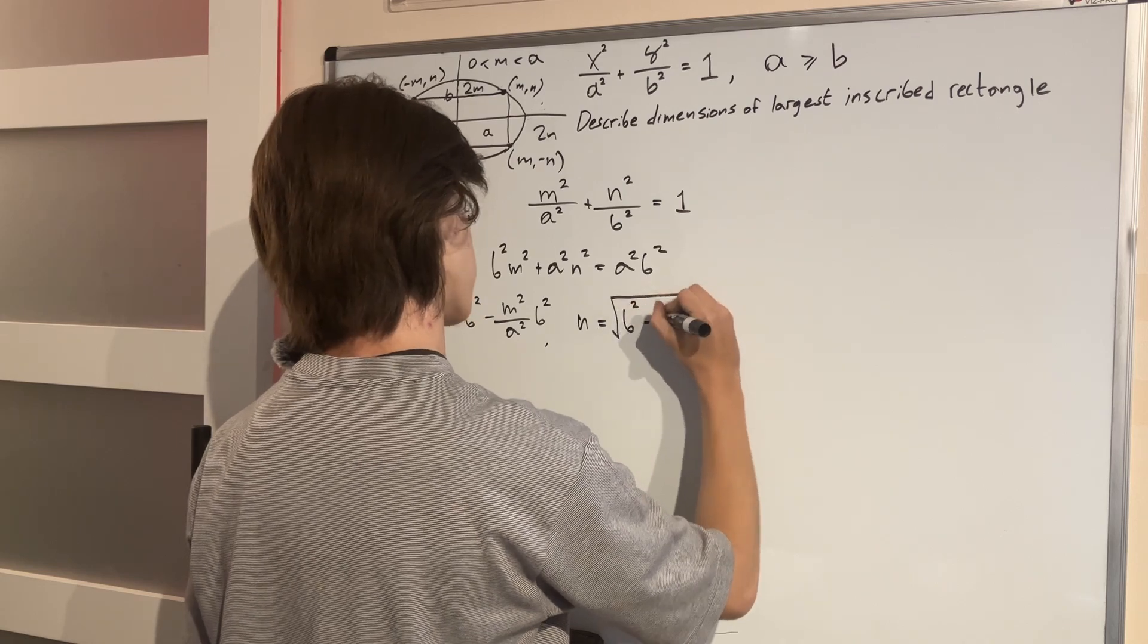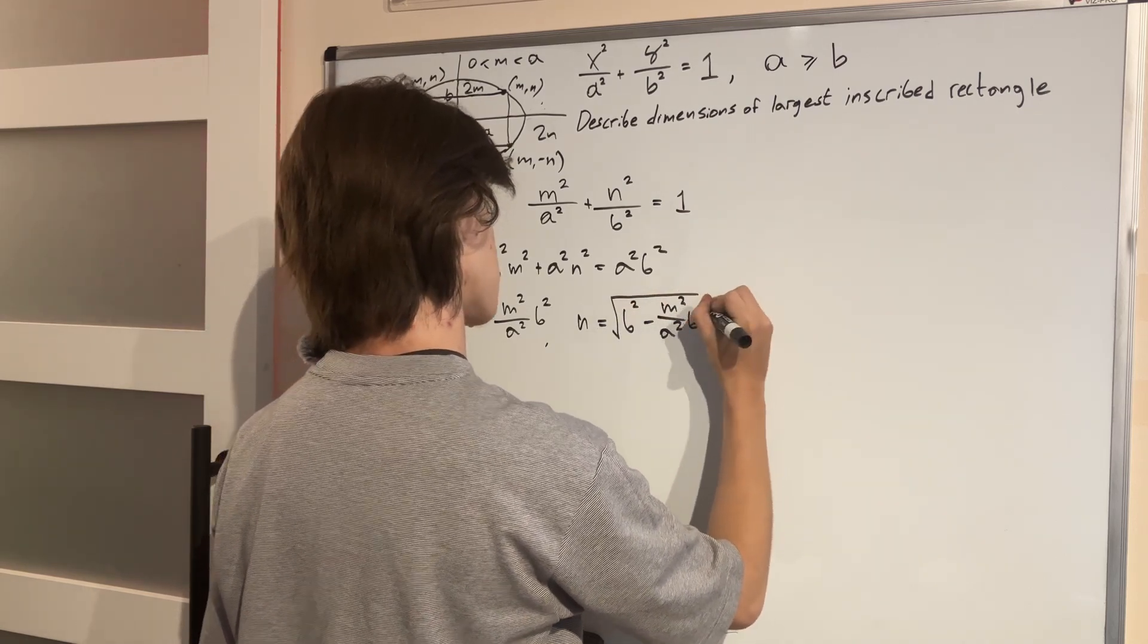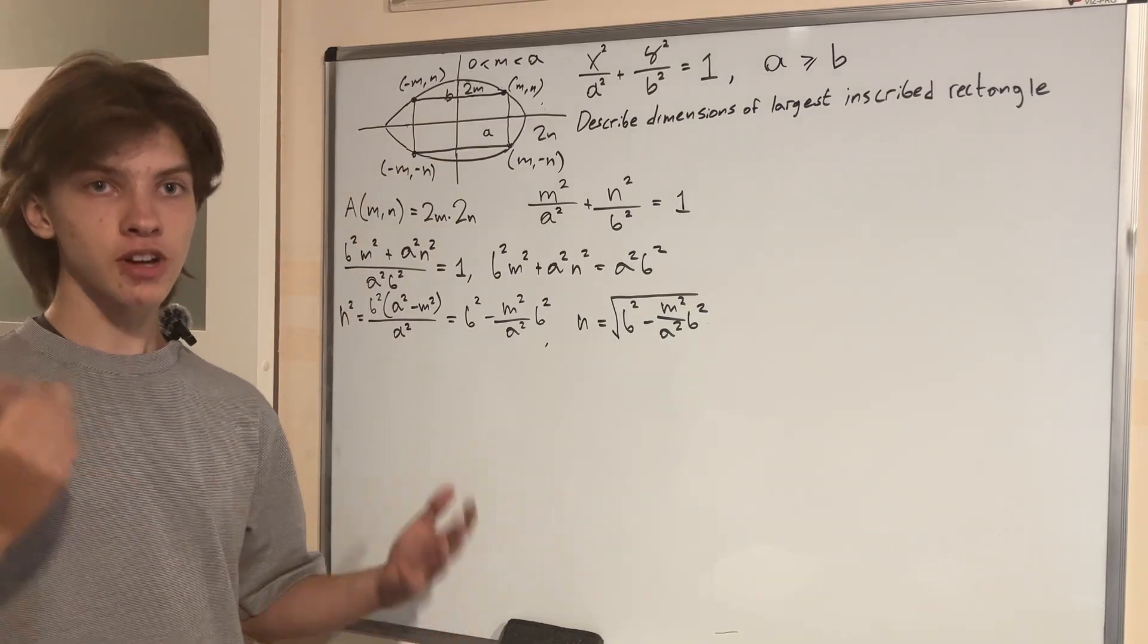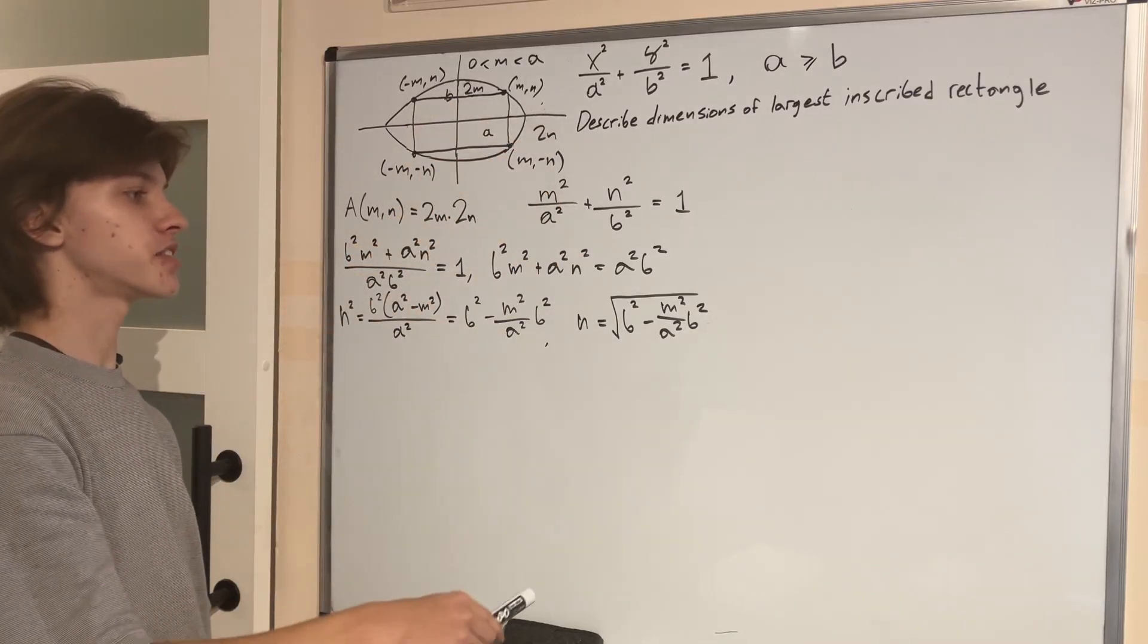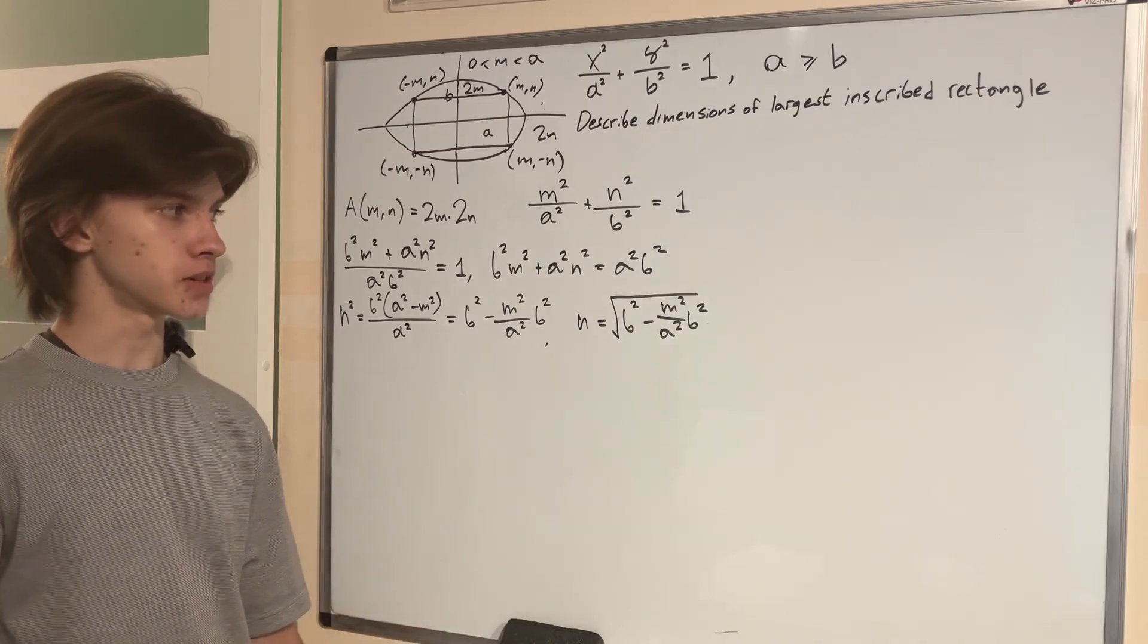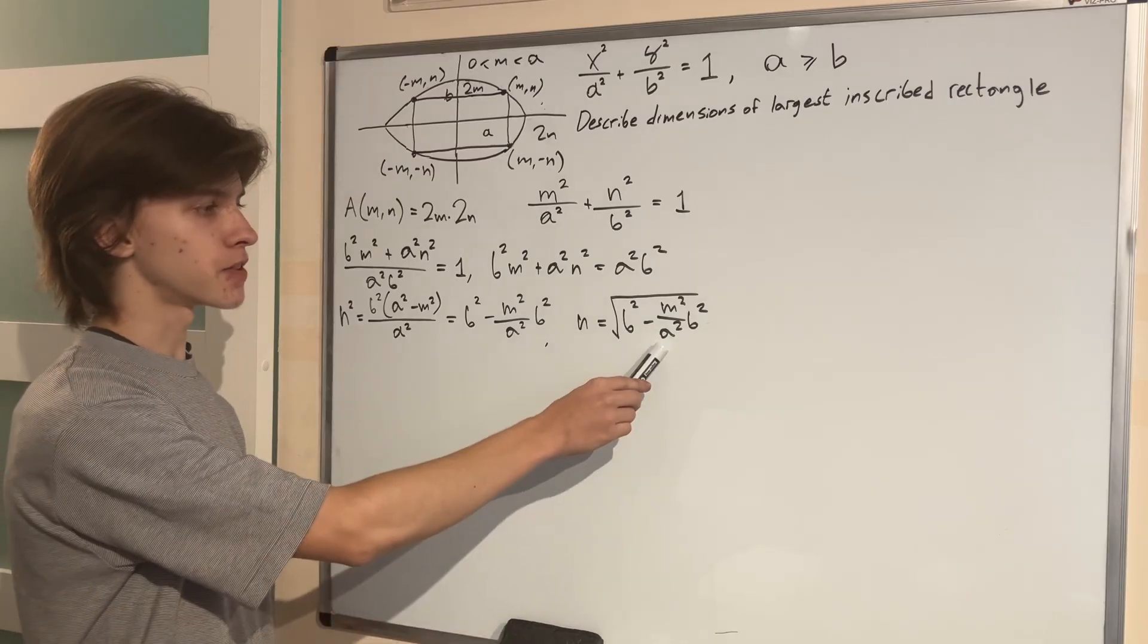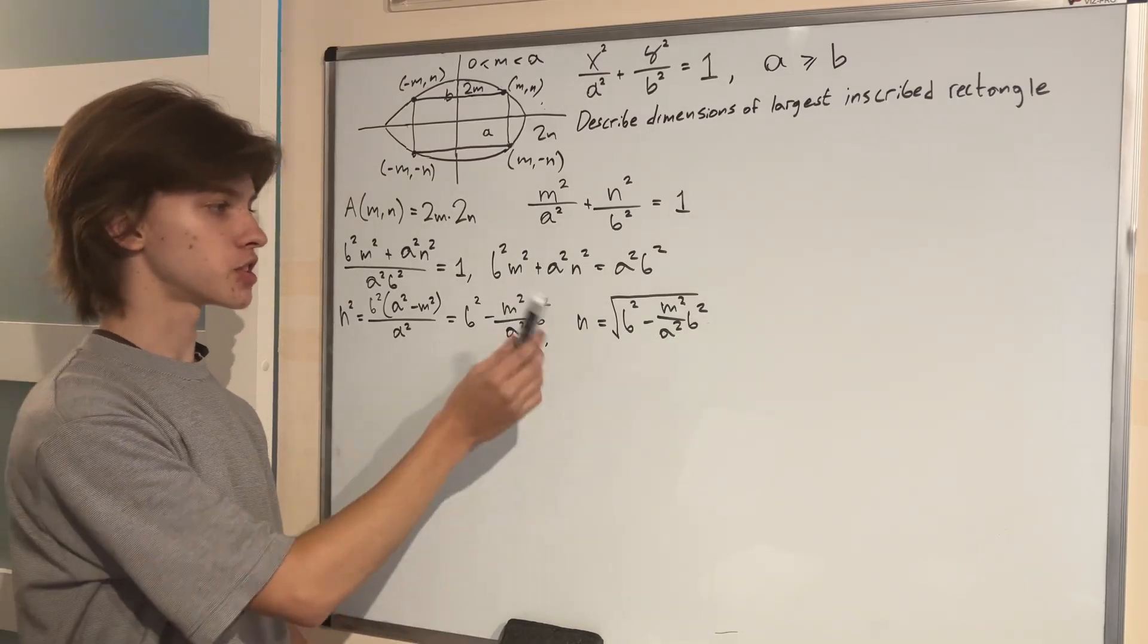But remember, we have to check the domain, the validity of this square root, because if this part right here is greater than B squared, then nothing is going to work. But luckily, we are fine, because M is between zero and A, meaning it's less than A. And A squared is being divided by A squared right here, meaning that M over A is less than one, meaning that M squared over A squared is less than one, and something less than one times B squared is obviously going to be less than B squared. So this is totally fine.